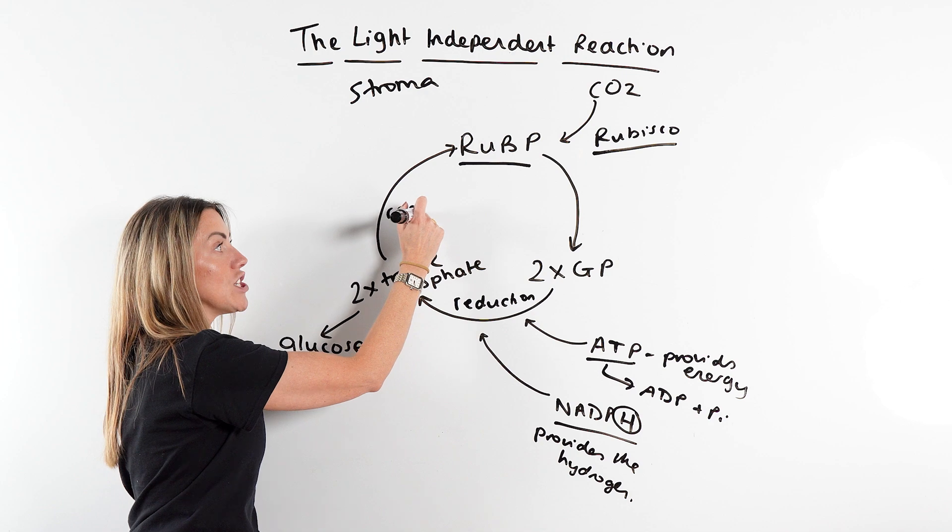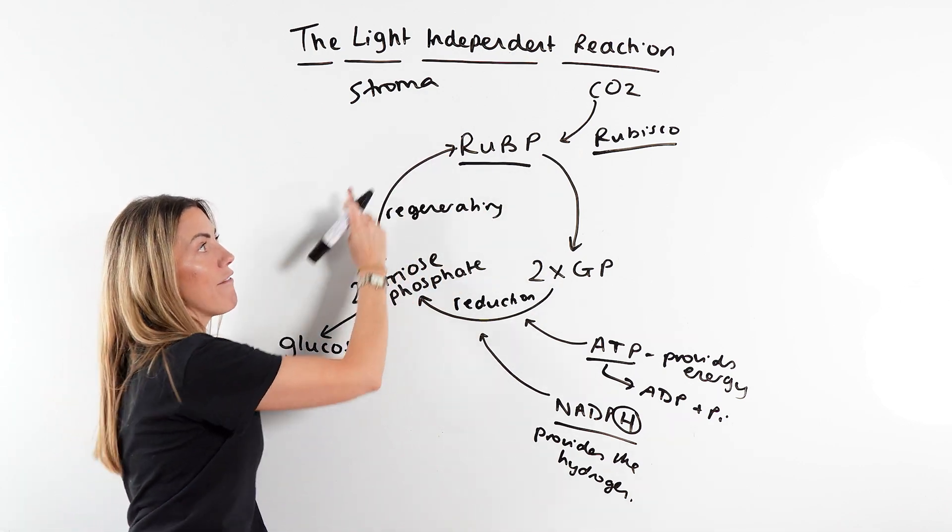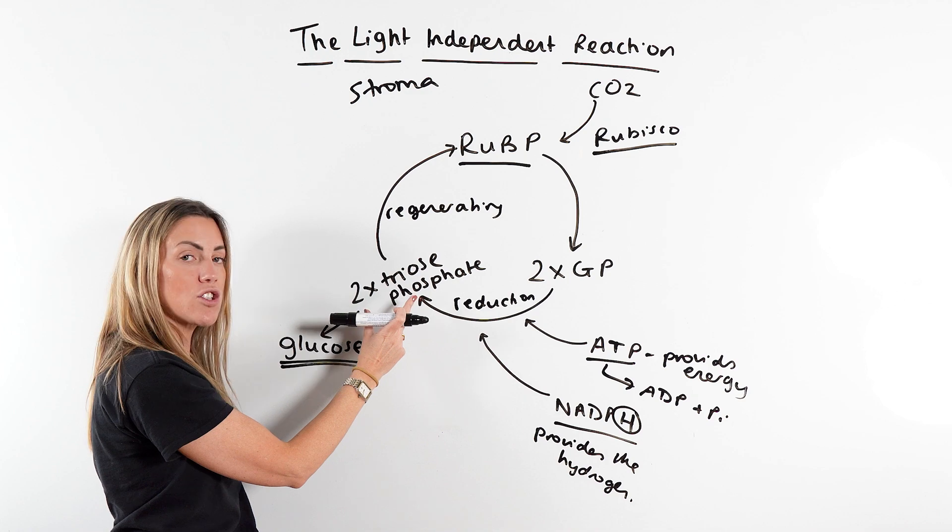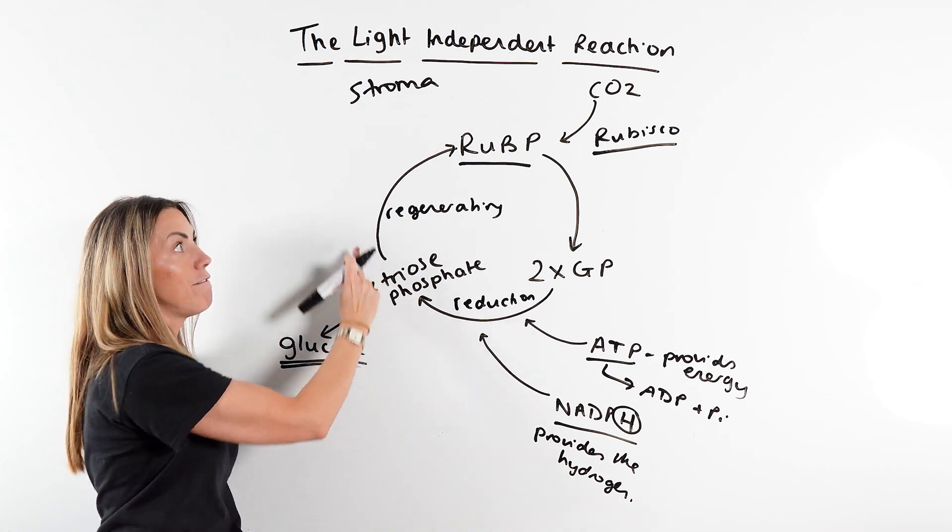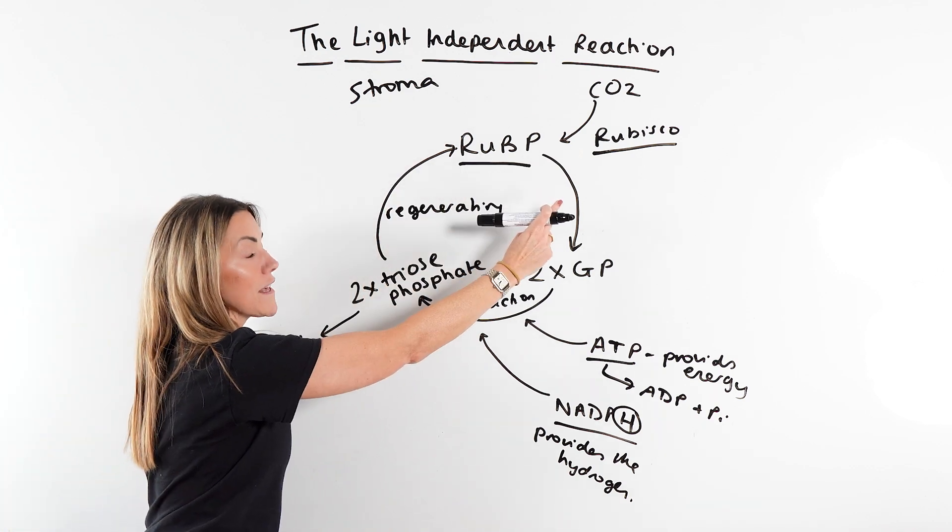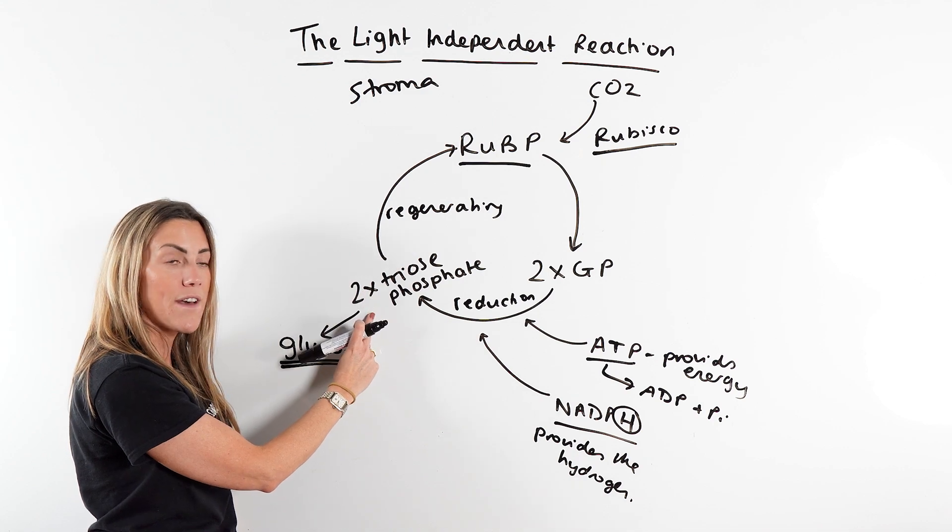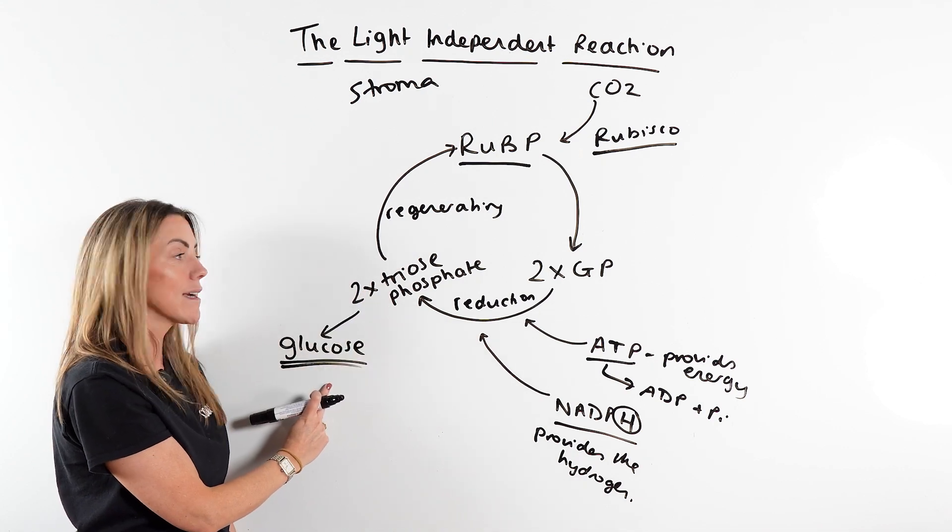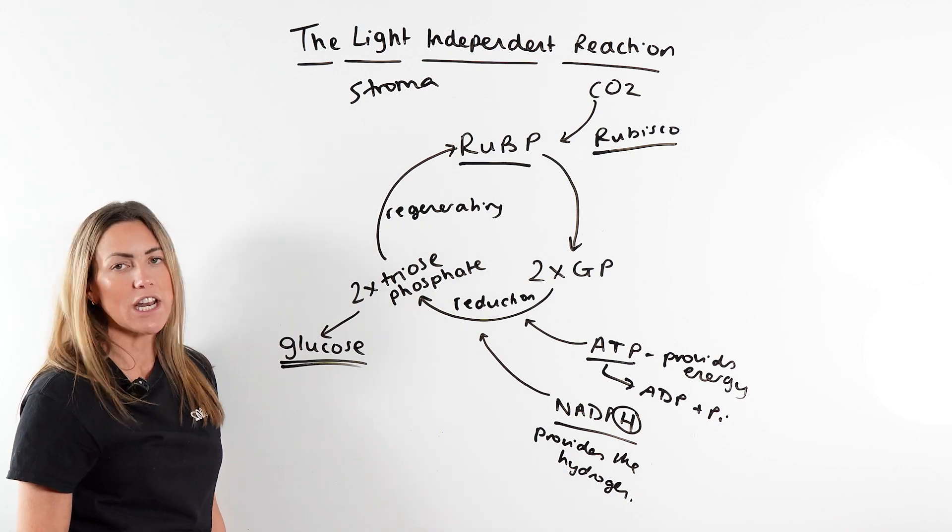So every three cycles, six triose phosphates, one goes towards making a glucose and five go towards regenerating RuBP. Or you can think of it as with six cycles, you'd make 12 triose phosphates. Two can go towards making a glucose and the other 10 can go towards regenerating RuBP.